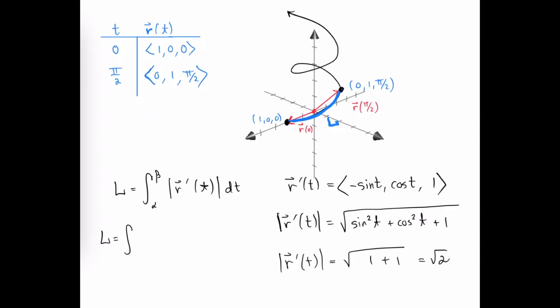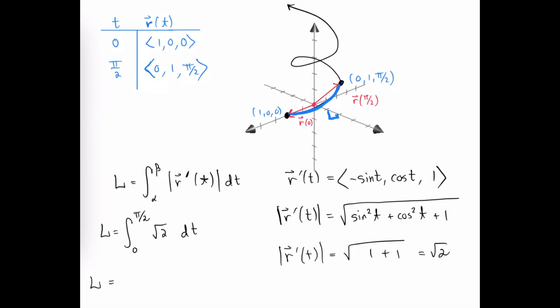So the arc length is going to be determined by the initial value of the parameter 0, the terminal value of the parameter π over 2. The magnitude of this derivative vector turned out to just be square root of 2, and then we integrate with respect to t.